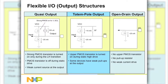Open drain outputs are only capable of sinking current and rely on an external pull-up resistor to drive the line high. Under heavy capacitive loading conditions, they have slower rising edge transitions compared to the totem pole and quasi output types, which have fast rising edges.